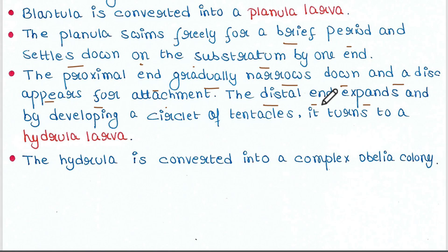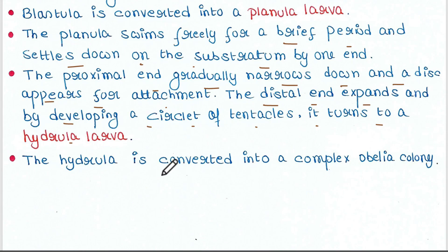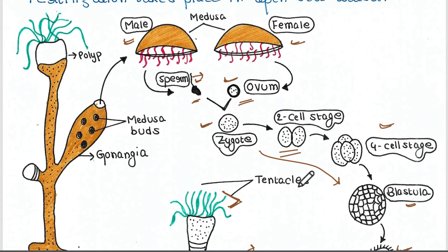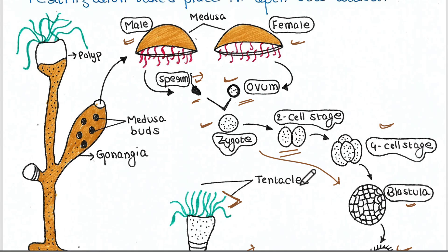The distal end expands, and by developing a circlet of tentacles, it turns into a hydrola larva — you can see the distal end expanding with tentacles forming. So the planula becomes the hydrola. The hydrola is then converted into a complex Obelia colony. We know the colony has three zooid types: polyp, gonangia, and the Medusa buds form inside the gonangia. These Medusa buds emerge from the gonangia and become male and female Medusae, and the cycle is repeated.